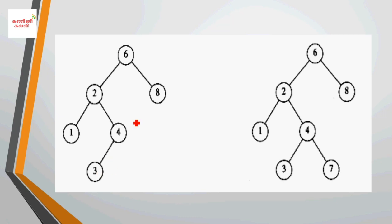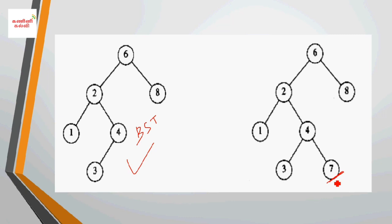This is a valid binary search tree. Now in another tree, the root is 6, but here a value 7 appears in the left subtree. Since 7 is greater than 6, this tree is not a binary search tree.